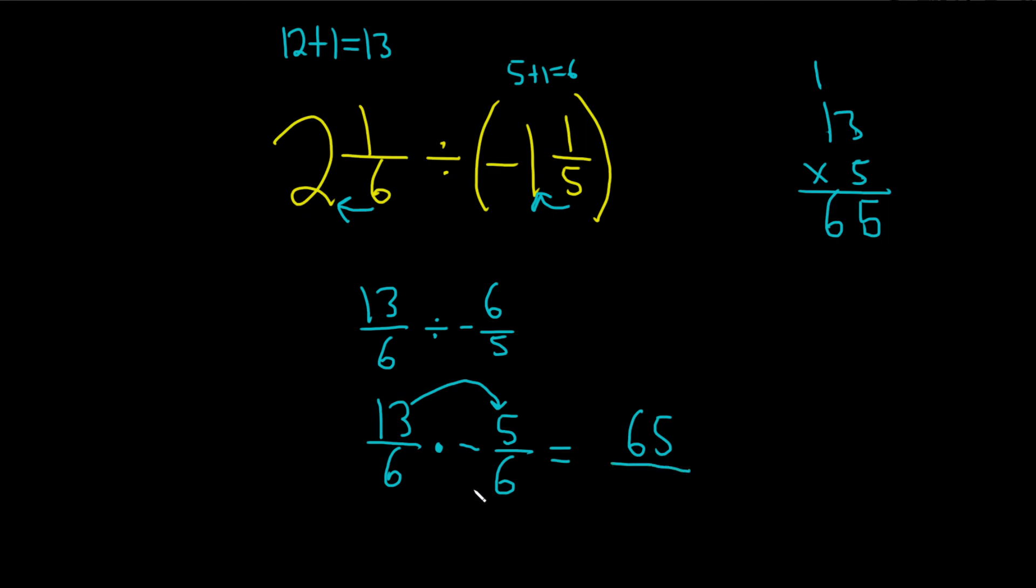Over, and then 6 times 6 is 36, and then one of them is negative, so the answer is negative. If exactly one of the fractions is negative, the answer is negative. If they're both negative, then you end up with a positive answer. I hope this video has been helpful.